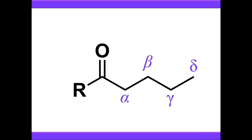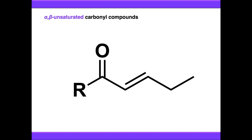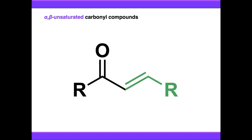One of the largest classes of compounds which undergo conjugate additions are alpha-beta unsaturated carbonyl compounds. These have a degree of unsaturation, or an alkene, in between the alpha and the beta positions. Broadly, these structures have a carbonyl component and an alkene component.